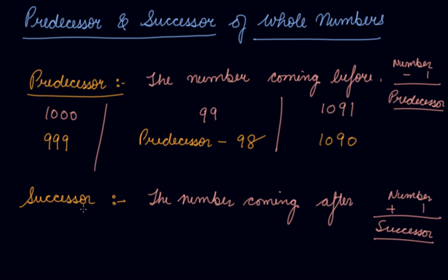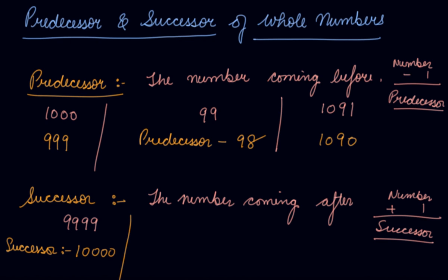Let's take a few questions. If I talk about 9999 — find out the successor of 9999. What you will do is add 1 to it, so you will get 10000. So, this is the successor of 9999. If I talk about calculating the successor of 199, the successor is what comes after 199 if you add 1 to it — 200.